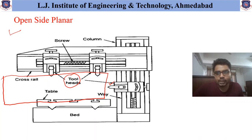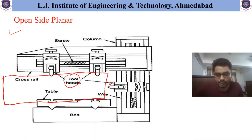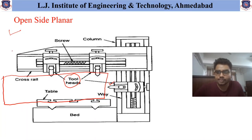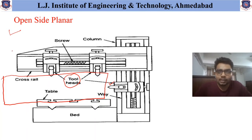The table reciprocates, and with this table the workpiece also reciprocates, and material removal takes place with the help of the two tool heads provided on the cross rails. This is the basic explanation for the open side Planner Machine.